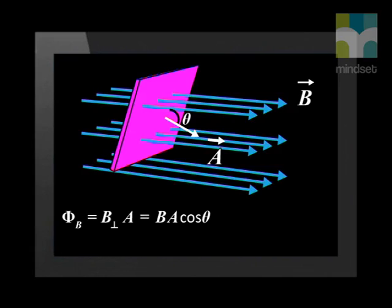We already know that scientists use the term magnetic flux to describe the magnetic field through an area. Magnetic flux phi is the strength of the magnetic field B multiplied by the perpendicular surface area of the device. If the magnetic field is not perpendicular to the surface, the magnetic flux phi is equal to the product of the magnetic field B and the area A cos theta, where theta is the angle between B and the normal of the surface.